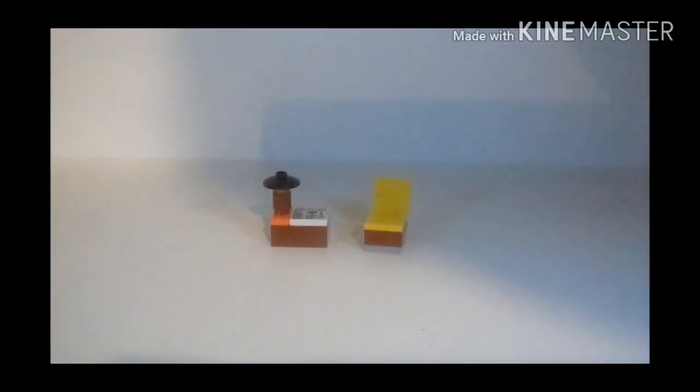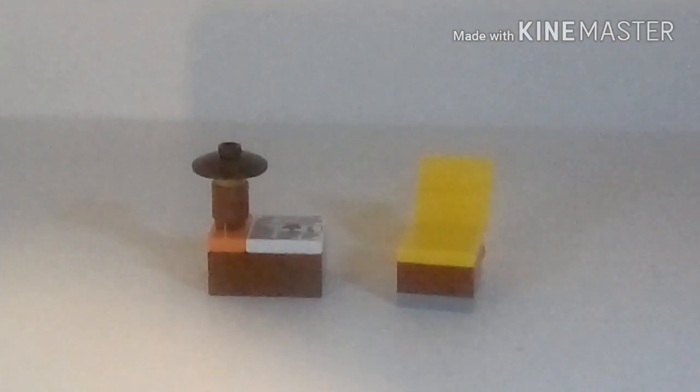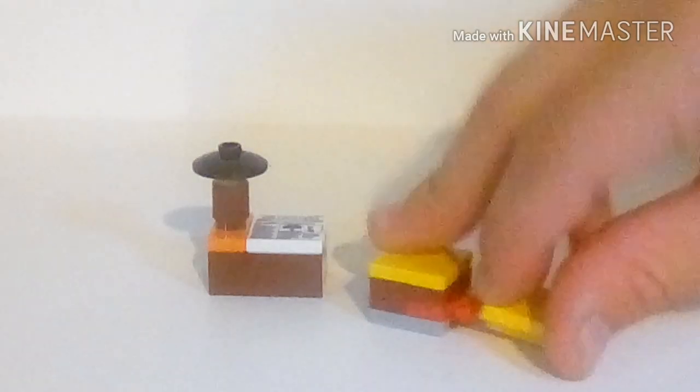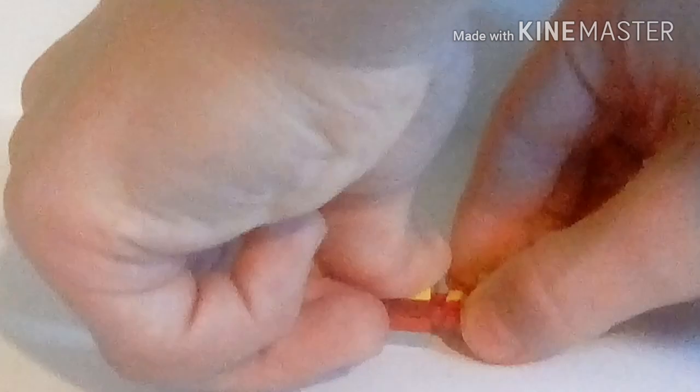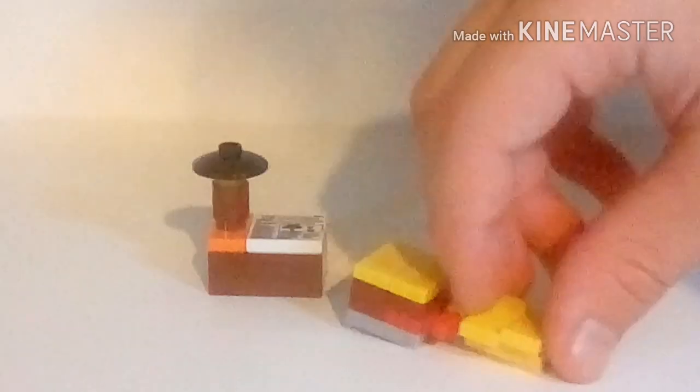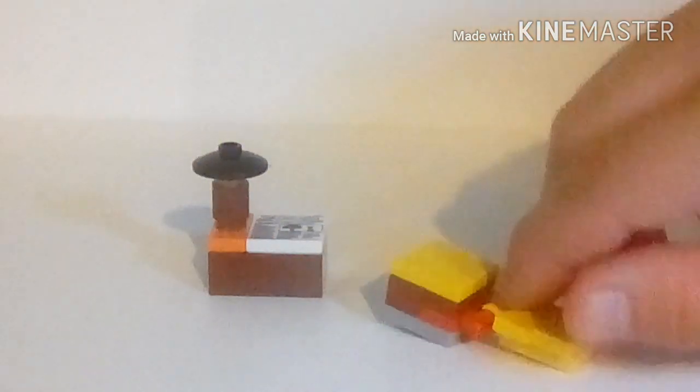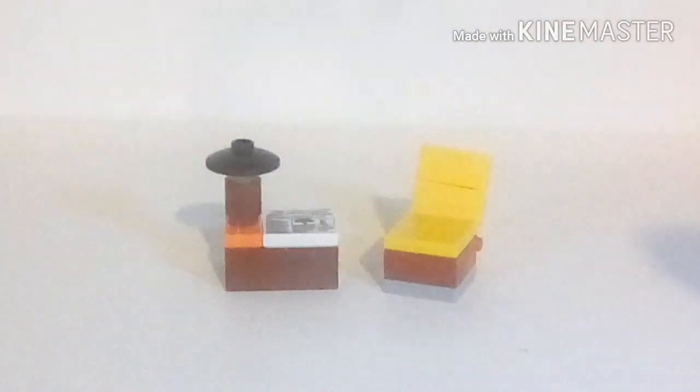First up we have the Lego reclining chair. It actually does recline and you can put it all the way down like that without it falling, and you can also have it up like that. The desk is just a 2x3 brick with a newspaper and a lamp.